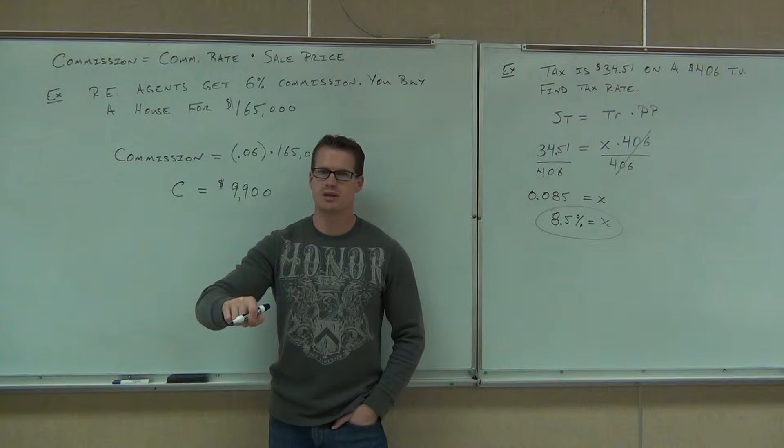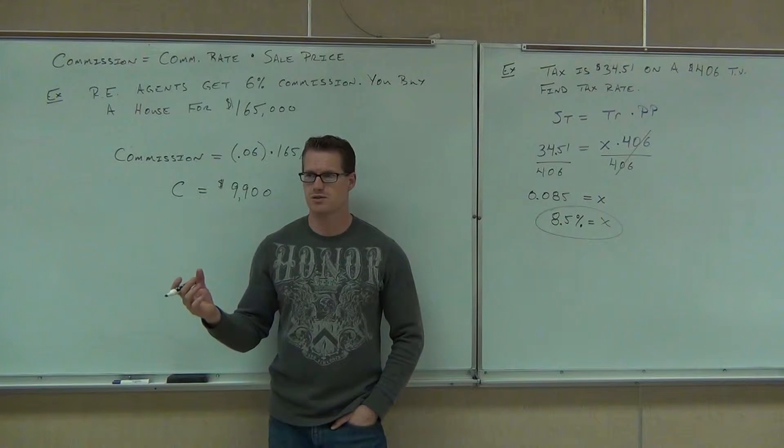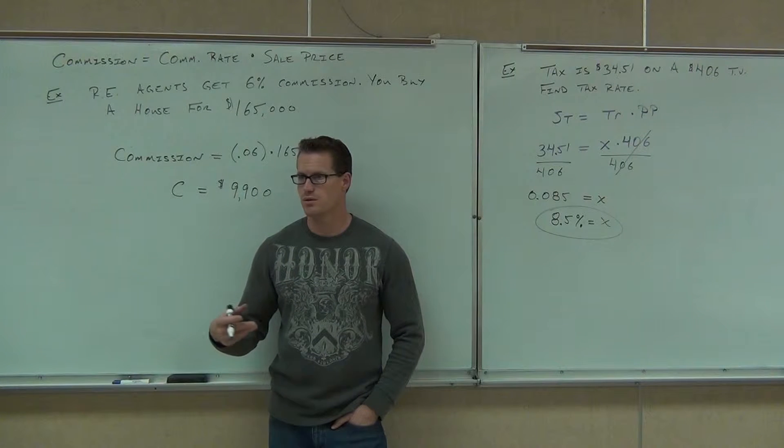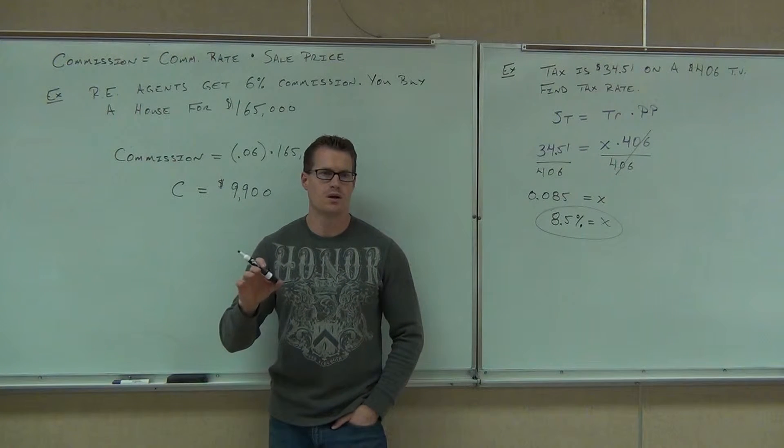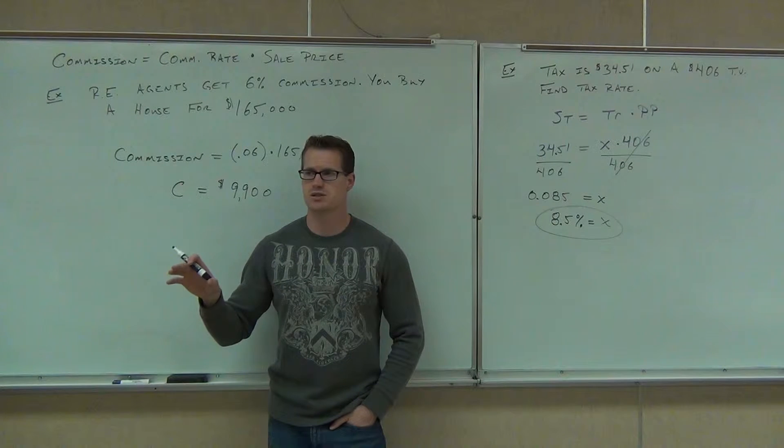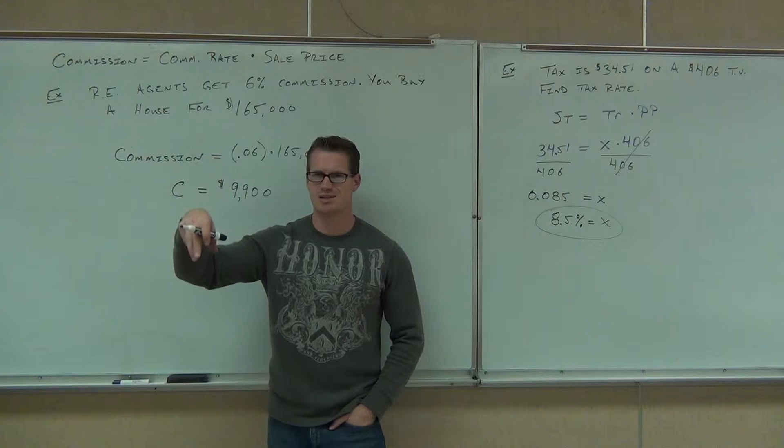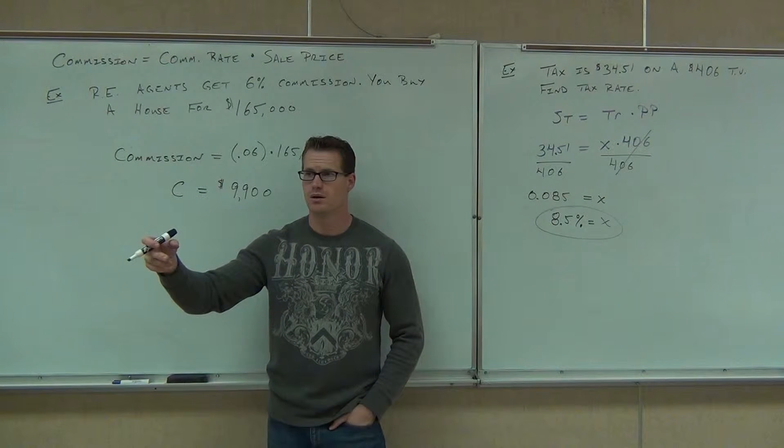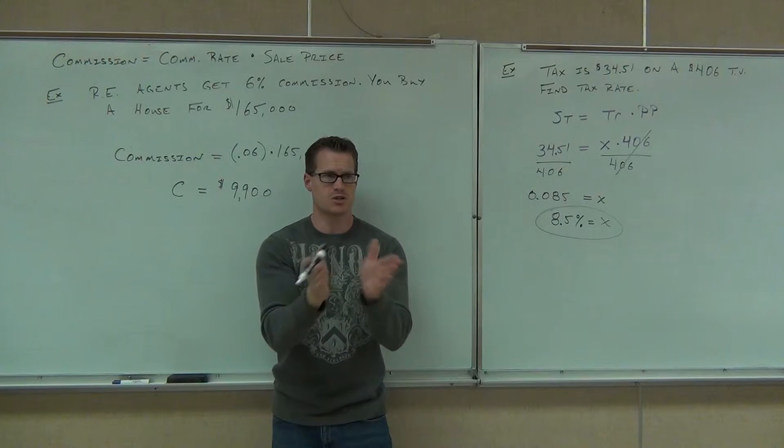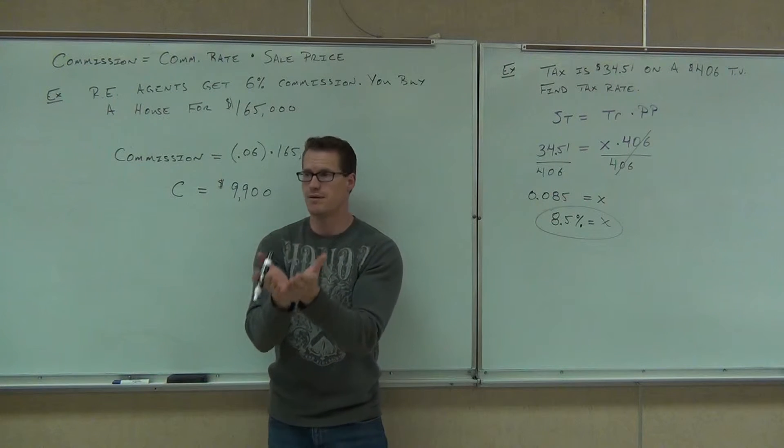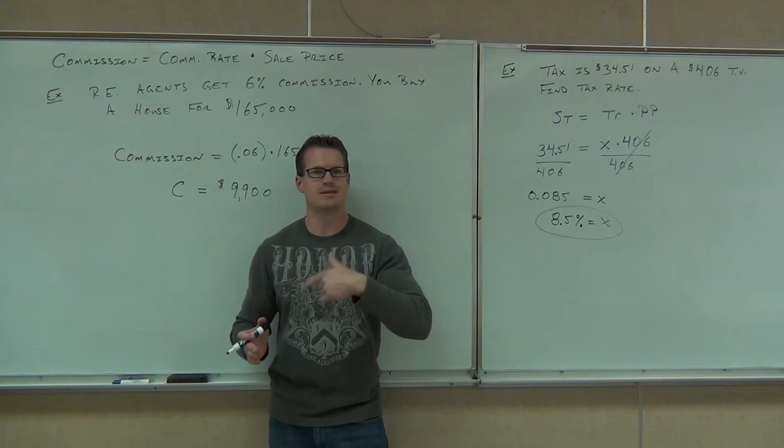Now, out of that 6%, typically he'll give, well, income tax, first of all. The government will take their piece from his, that's his money, right? So they're going to take some of that. He'll pay for his health insurance, he'll pay for his broker, because typically people work for a broker, and like, you know those real estate signs you see like Century 21? That's called a brokerage firm, and everybody who works for them gives them a percentage of their sales to be able to have the name and to be able to get those listings.